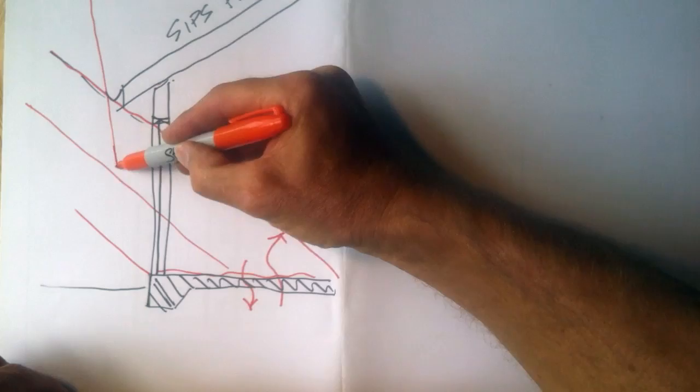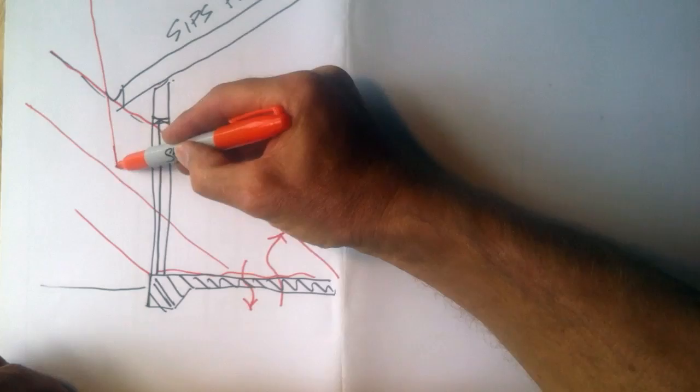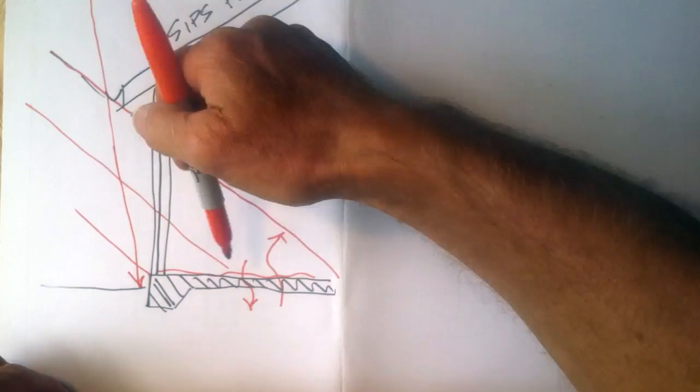Now in the summertime when the sun's high in the sky, the eave overhang including the gutter is enough to stop that sun from shining in at all. So that's what keeps the place cool in the summer.